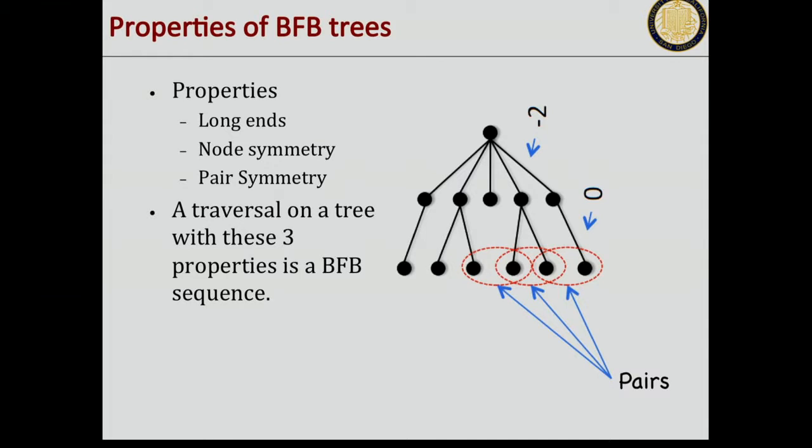If you have all these three properties, it's a breakage fusion bridge. There's a one-to-one connection because anytime you have a tree like this, you can do an in-order traversal and that will give you a breakage fusion bridge. Our problem can be remodeled as: you're given these counts, can you make trees which have this property?